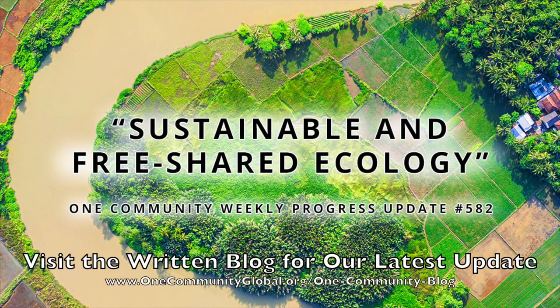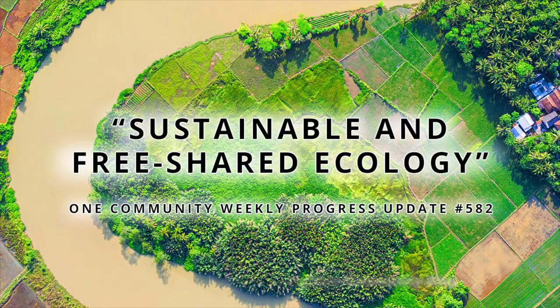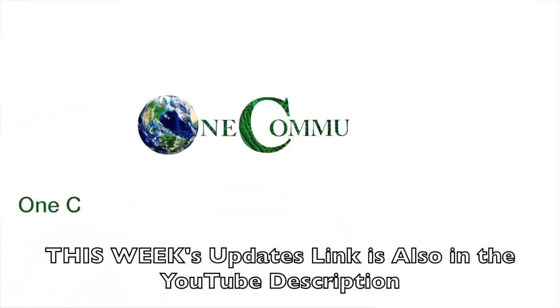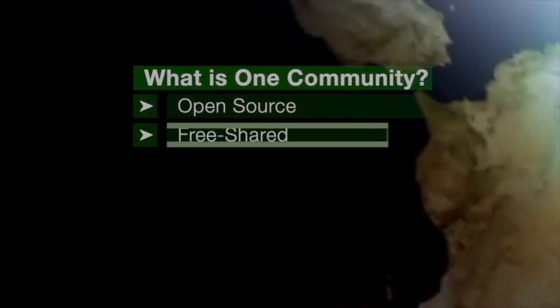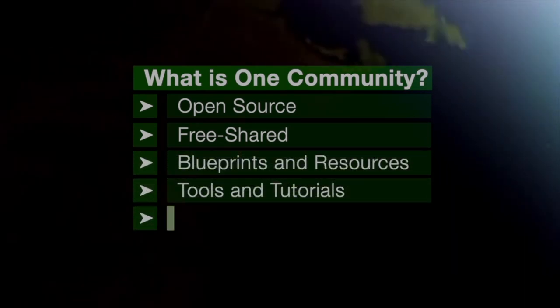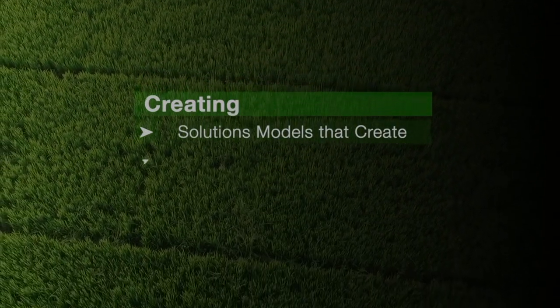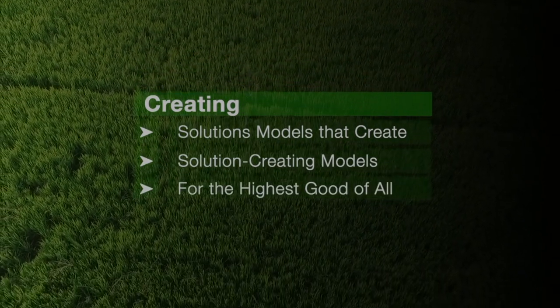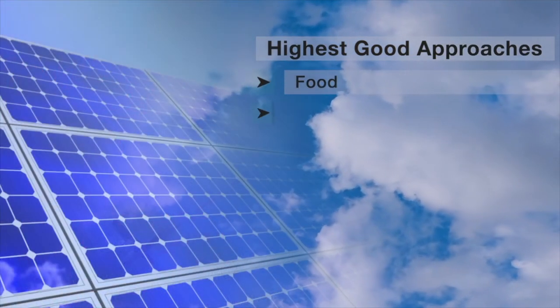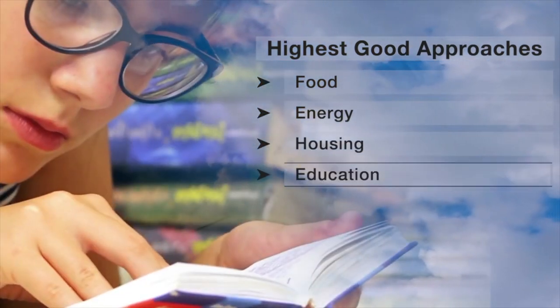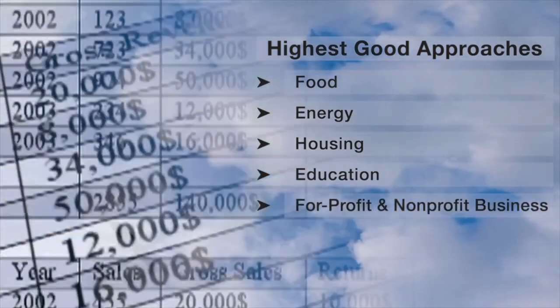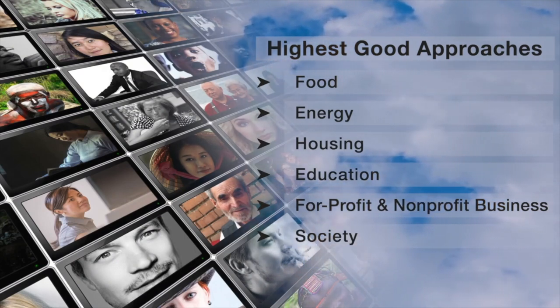Sustainable and free shared ecology. One Community Weekly Progress Update number 582. One Community is a 501c3 non-profit organization. We are creating open source and free shared blueprints and resources, tools and tutorials, and do-it-yourself instructions for highest good living — creating solution models that create additional solution-creating models in the service of all life on this planet. This includes highest good approaches to food, energy, housing, education, for-profit and non-profit business creation, society, and true earth stewardship.